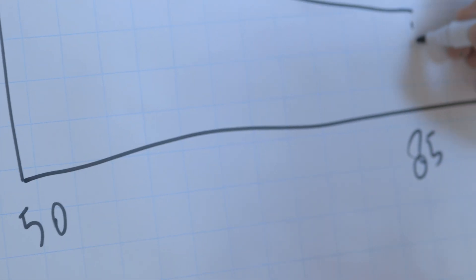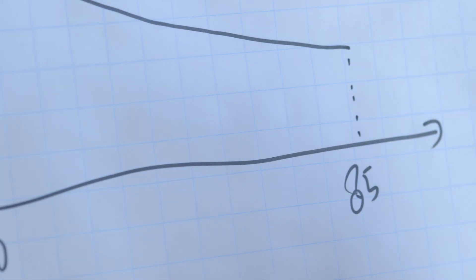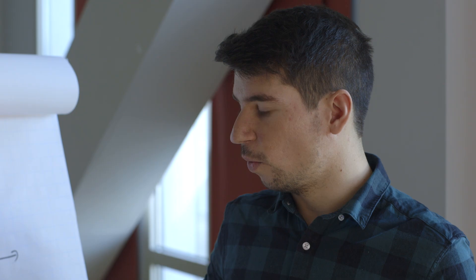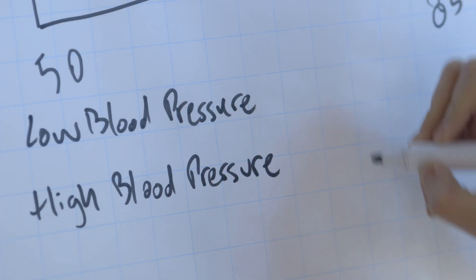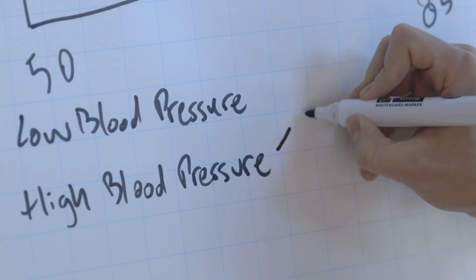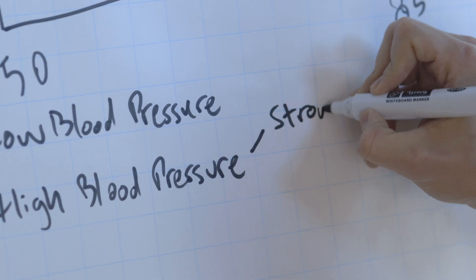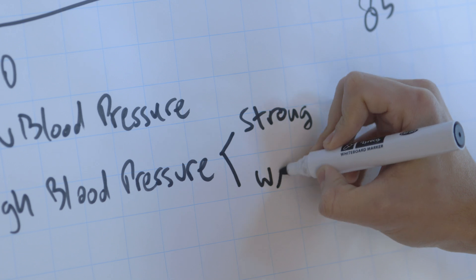The first explanation about this is that something changes inside the human body which causes this decrease in risk. Another explanation which I propose is that at age 50 we have low blood pressure patients and high blood pressure patients. But these high blood pressure patients can be strong or weak.